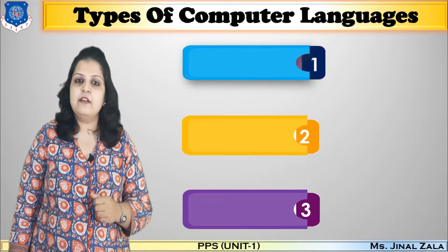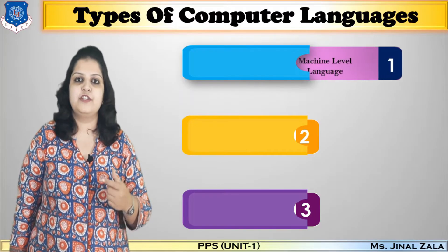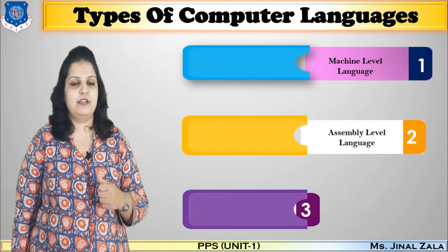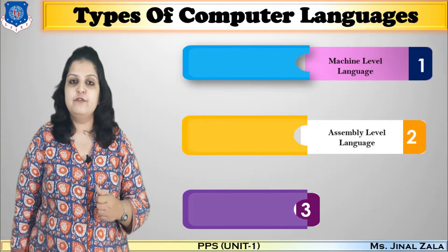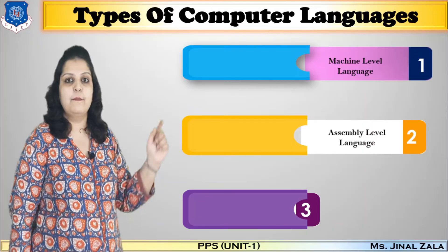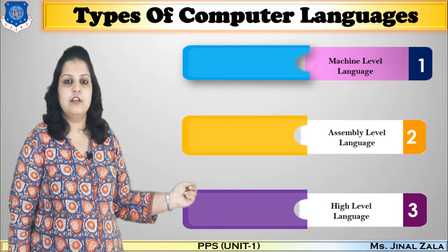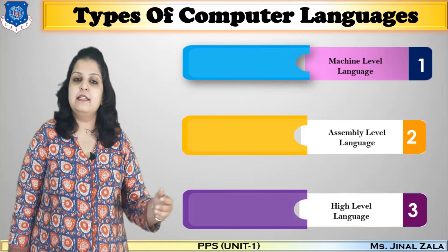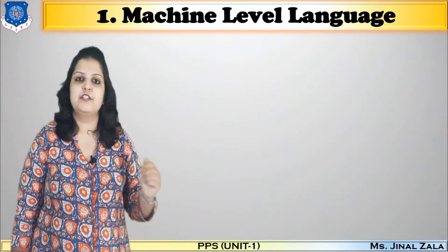Low-level language is also categorized into two parts: the first is machine language and the second is assembly-level language. And in this video lecture, we are going to discuss these three different languages — machine language, assembly language, and high-level language — with an introduction and the merits and demerits of each.